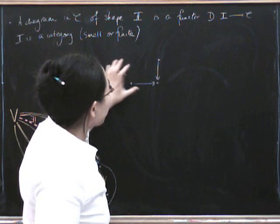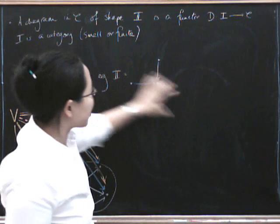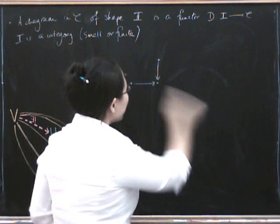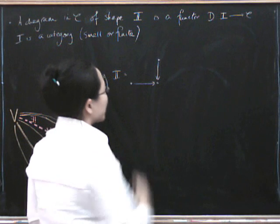then what's a functor from this category to C? Well a functor from this category to C is going to be three objects of C and a morphism going here and a morphism going here.